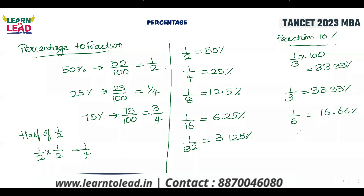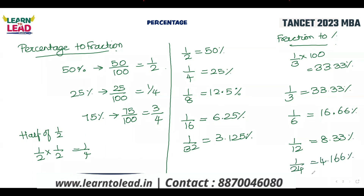One by six is 16.66%. Then one by twelve is 8.33%. And one by twelve leads to one by twenty-four, which is 4.166%.